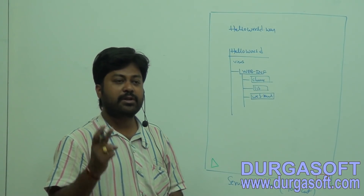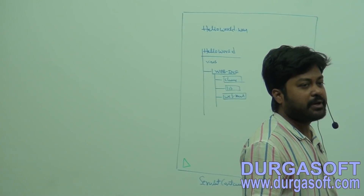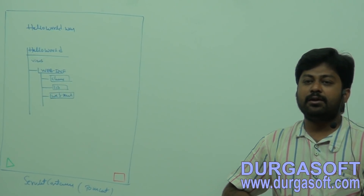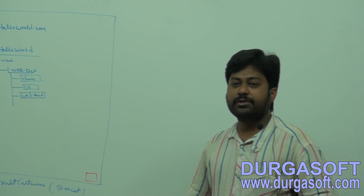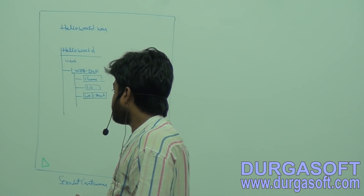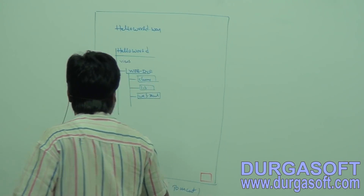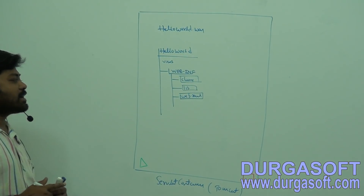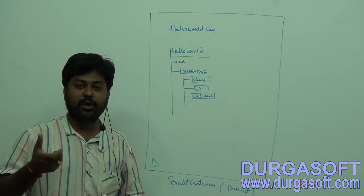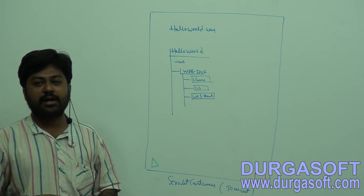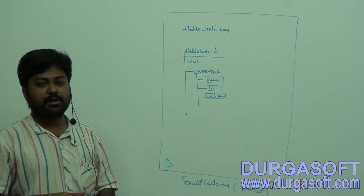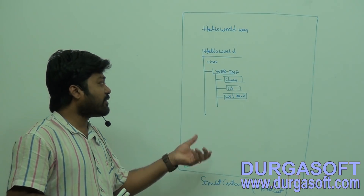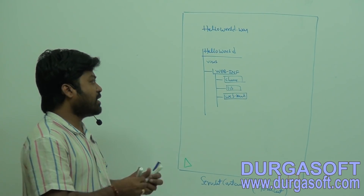After reading this web.xml file, the container will create two types of objects: one ServletContext object and one ServletConfig object. So once it reads the web.xml file, how many ServletContext and ServletConfig objects will it create? We'll cover that — but first, let's talk about when our servlet class will be initialized.